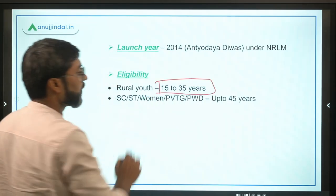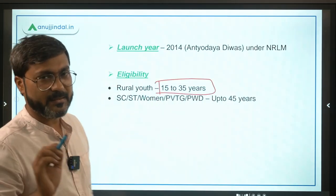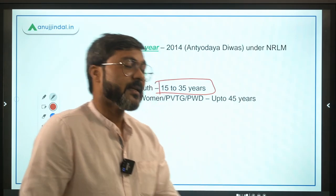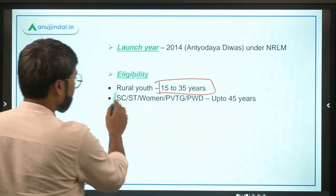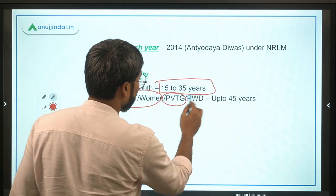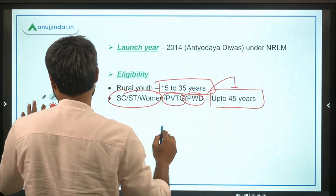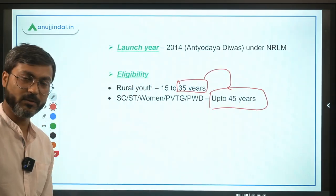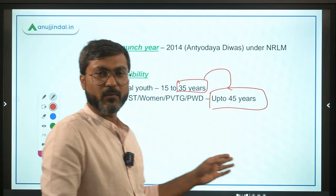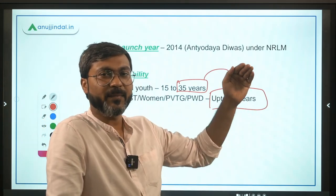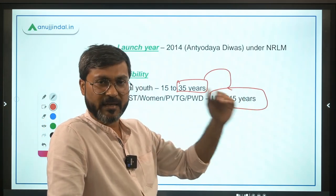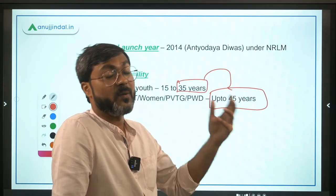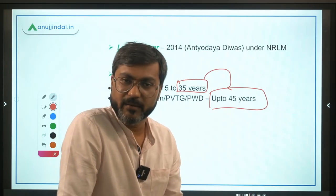Regarding eligibility, all rural youth between the age of 15 to 35 years will be provided skill training based on their potential and interest. However, if the beneficiary belongs to SC/ST, women, PVTG, or PWD categories, the maximum age bar can be extended up to 45 years.